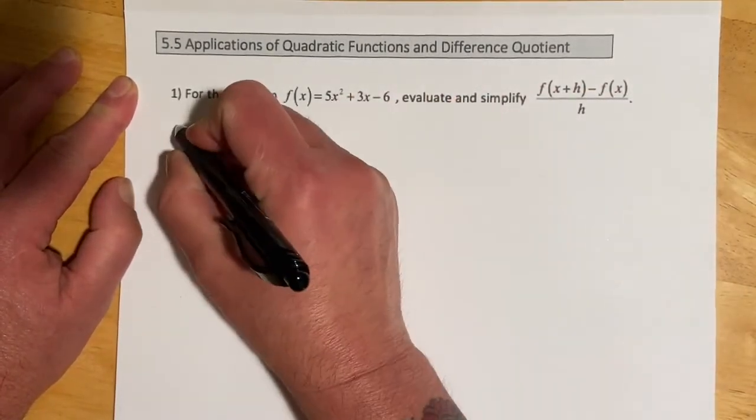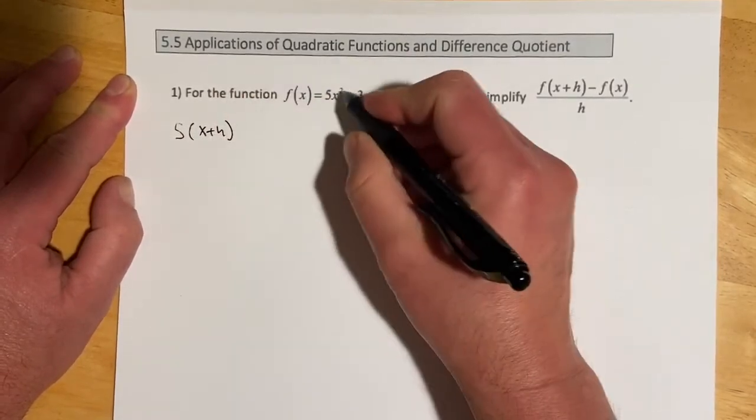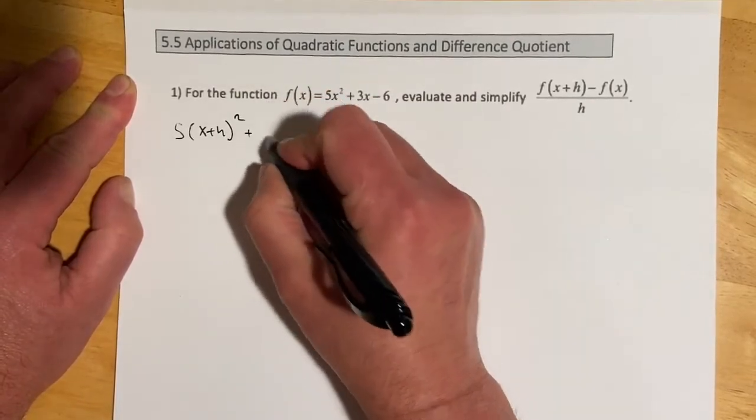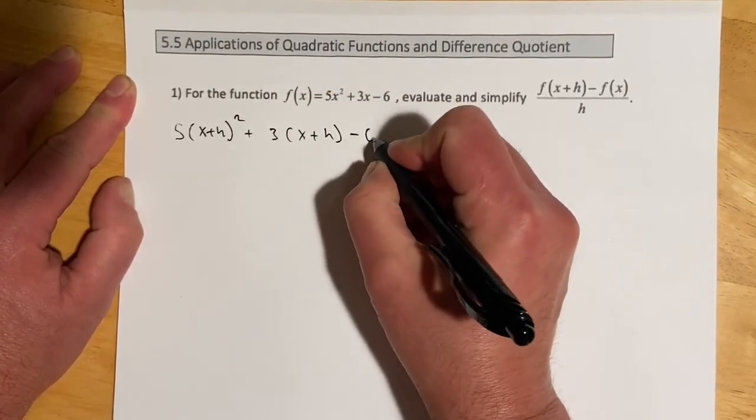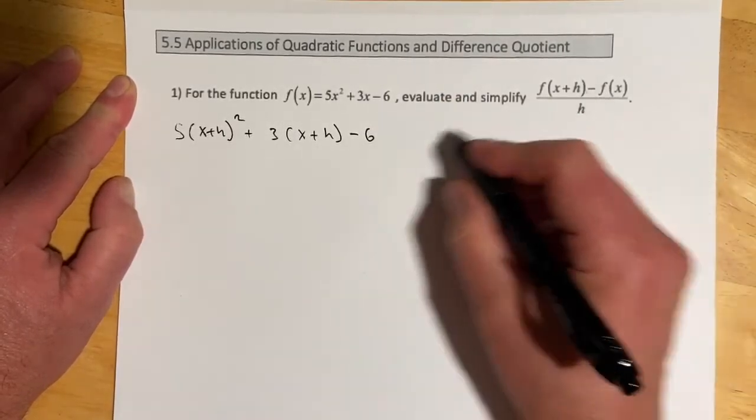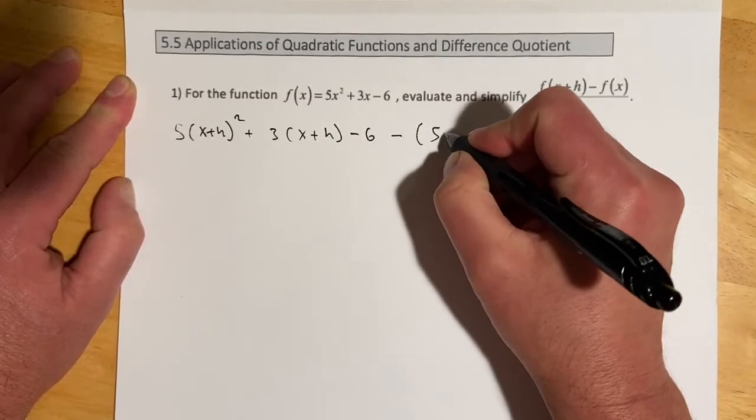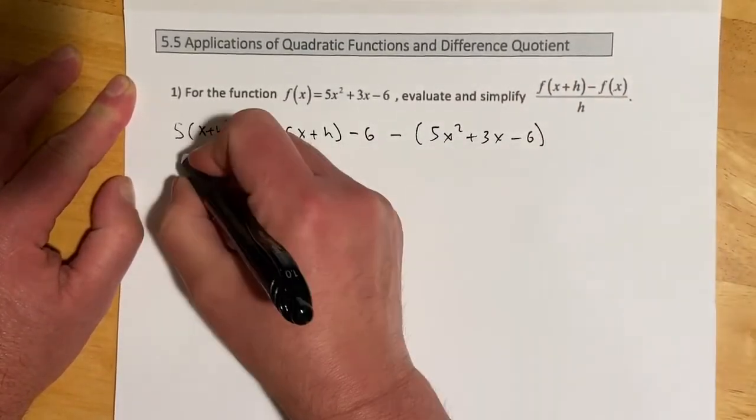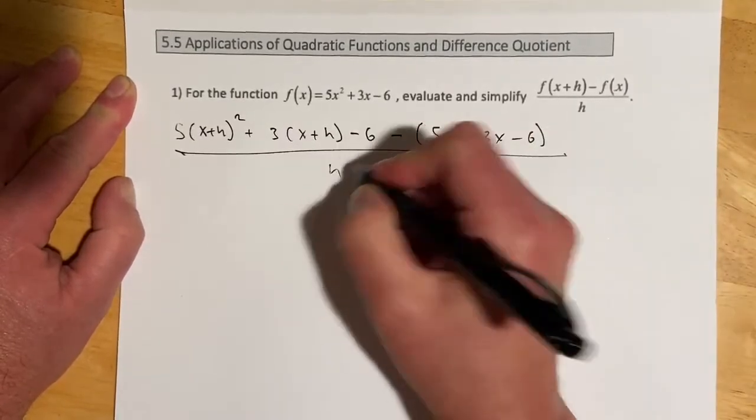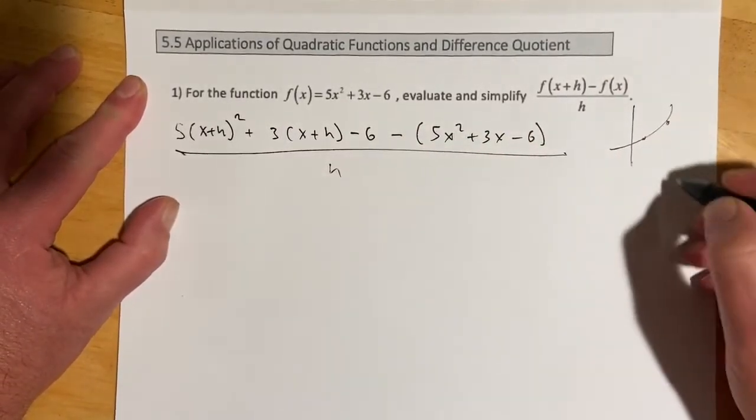So this is telling us to evaluate the function at x plus h. So coming over here, that would be 5. And then x plus h is going in for that x. So it'd be squared plus 3 times x plus h minus 6. And then we're going to take away f of x, which is our original function. So 5x squared plus 3x minus 6. And then that's all over h.